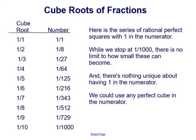Here is a series of rational perfect cubes with 1 in the numerator. The cube root of 1 over 1 is 1 over 1. The cube root of 1 eighth is 1 half. The cube root of 1 twenty-seventh is 1 third. The cube root of 1 sixty-fourth is 1 fourth, and so on. While we stop at 1 one-thousandth, there is no limit to how small these can become.